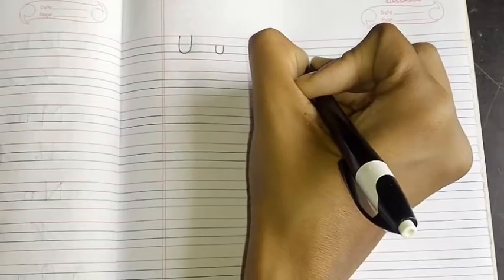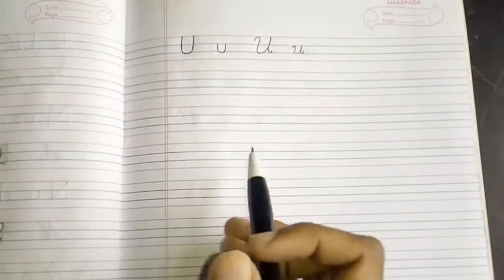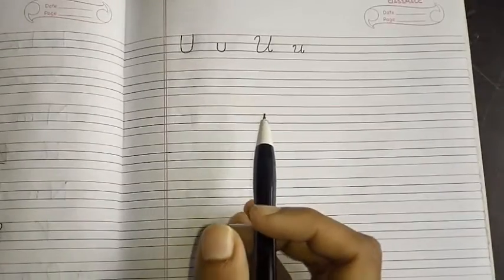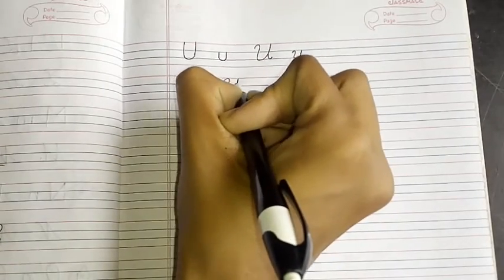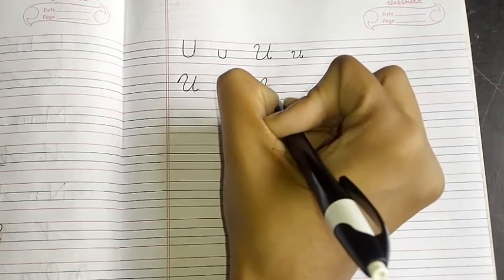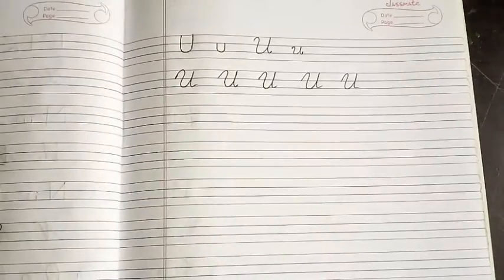We will begin with the letter U. Print capital, then small, cursive capital, cursive small. As I said, we will be practicing cursive capital. Here it goes, like this. Do it with me. Second, top, third, up and above this. U. Letter U is done.